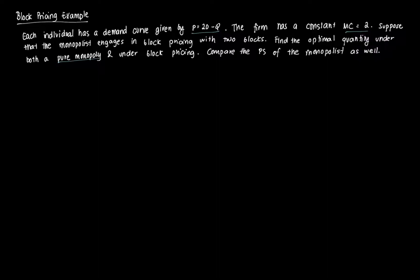Suppose each individual has a demand curve of P = 20 minus Q, and the marginal cost is constant at 2. This is actually our example from the last video as well.